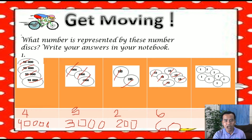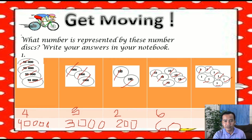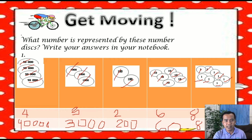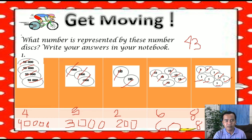Next, how many 1's do we have? 1, 2, 3, 4, 5, 6, 7, 8 — we have 8 ones. So that is 8. What is the number now? 43,268. So the correct answer is 43,268.